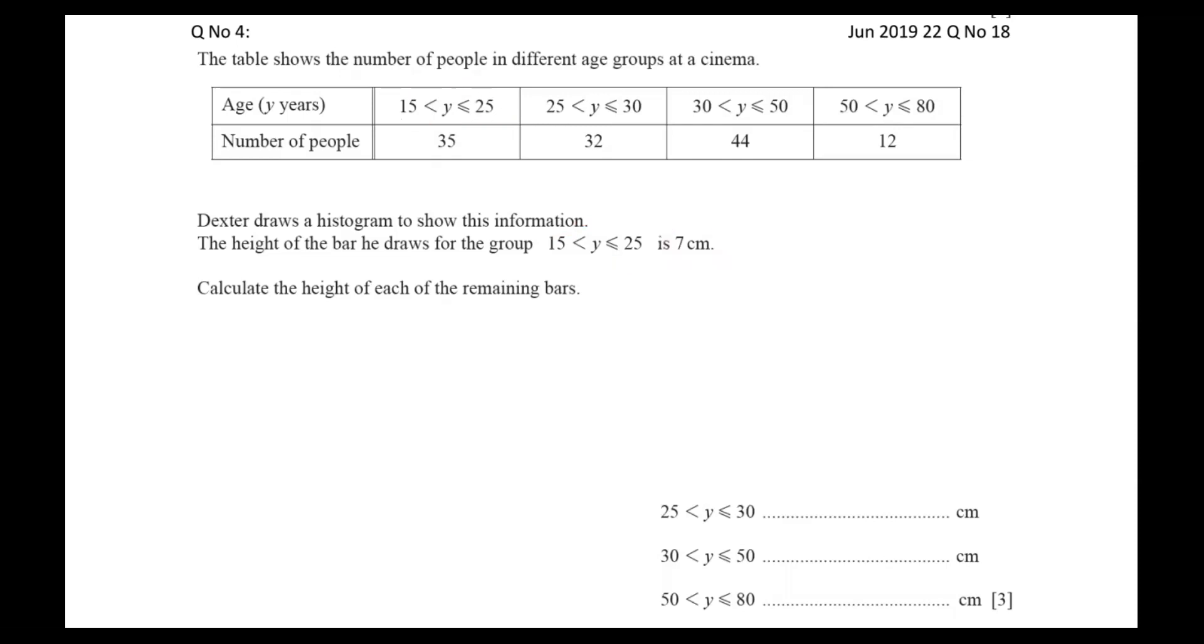All of you know, when you talk about histogram we have a fixed formula. I'm writing the formula here: frequency density equals frequency divided by class width. Frequency density is also called height of bar or height of column. So I'll say here bar, height of bar.